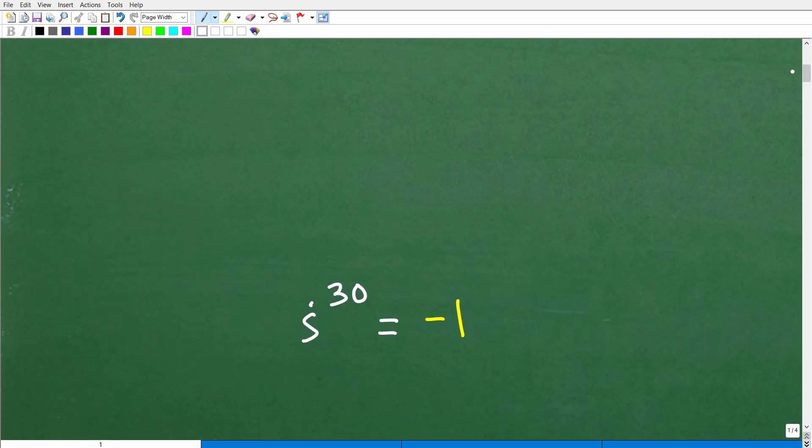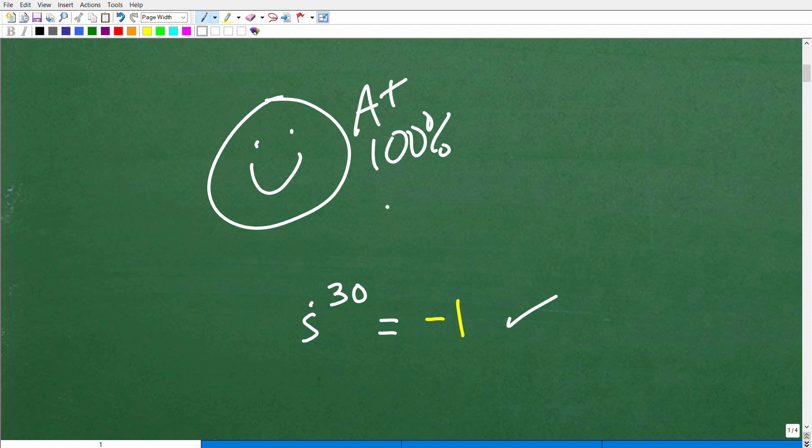All right, i to the 30th power is equal to negative 1. Okay, so how did you do? Well, if you got this right without the aid of a calculator, well, that's very good. Matter of fact, I'm going to give you a nice little happy face and A plus, a 100% and a few stars so you can celebrate your awesomeness in mathematics. Nice job, okay?